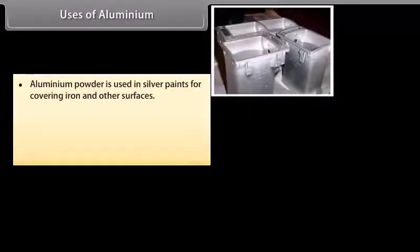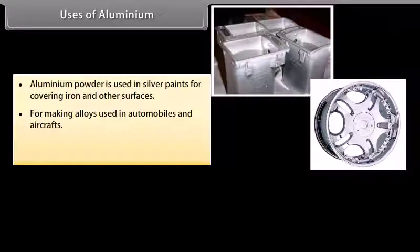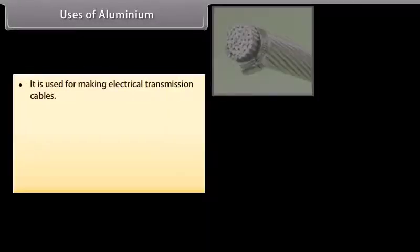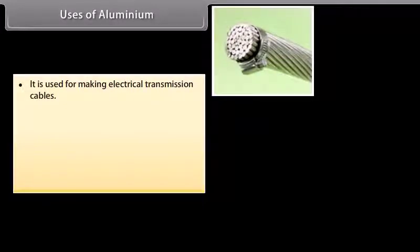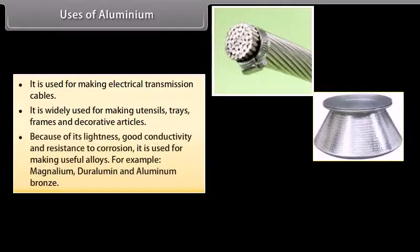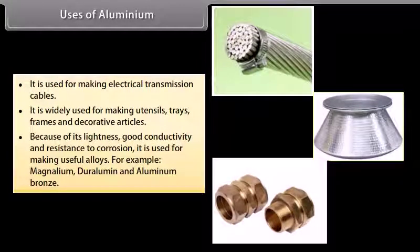Uses of aluminium. Aluminium powder is used in silver paints for covering iron and other surfaces, for making alloys used in automobiles and aircrafts, for making thin foils for wrapping cigarettes and confectionery. It is used for making electrical transmission cables. It is widely used for making utensils, trays, frames and decorative articles because of its lightness, good conductivity and resistance to corrosion. It is used for making useful alloys. For example, magnalium, duralumin and aluminium bronze.